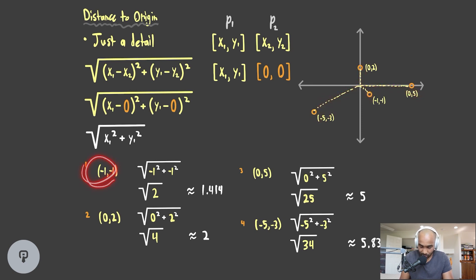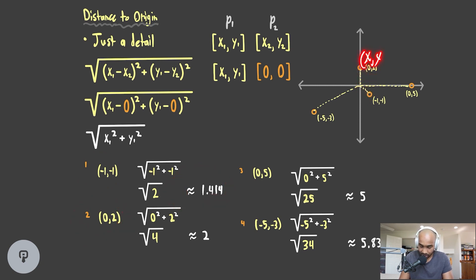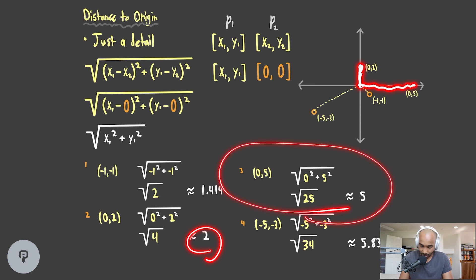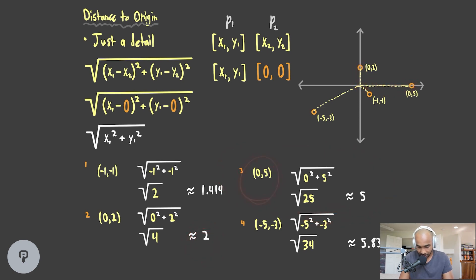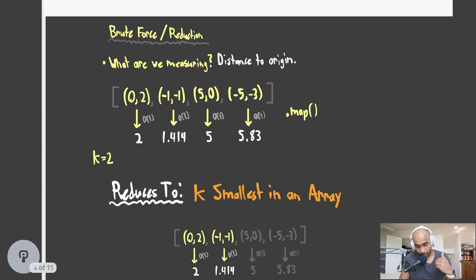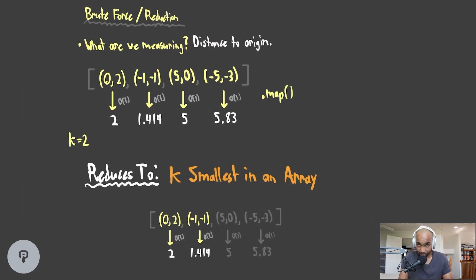The point (-1, -1) is the closest. The point (0, 2) — x is 0 and y is 2 — is 2 away. The point (5, 0) is fairly simply 5 away. Then (-5, -3): we go back 5 and down 3, giving a distance of 5.83. So this gives us the distances for each point. Now how are we going to find a brute force solution to this problem?